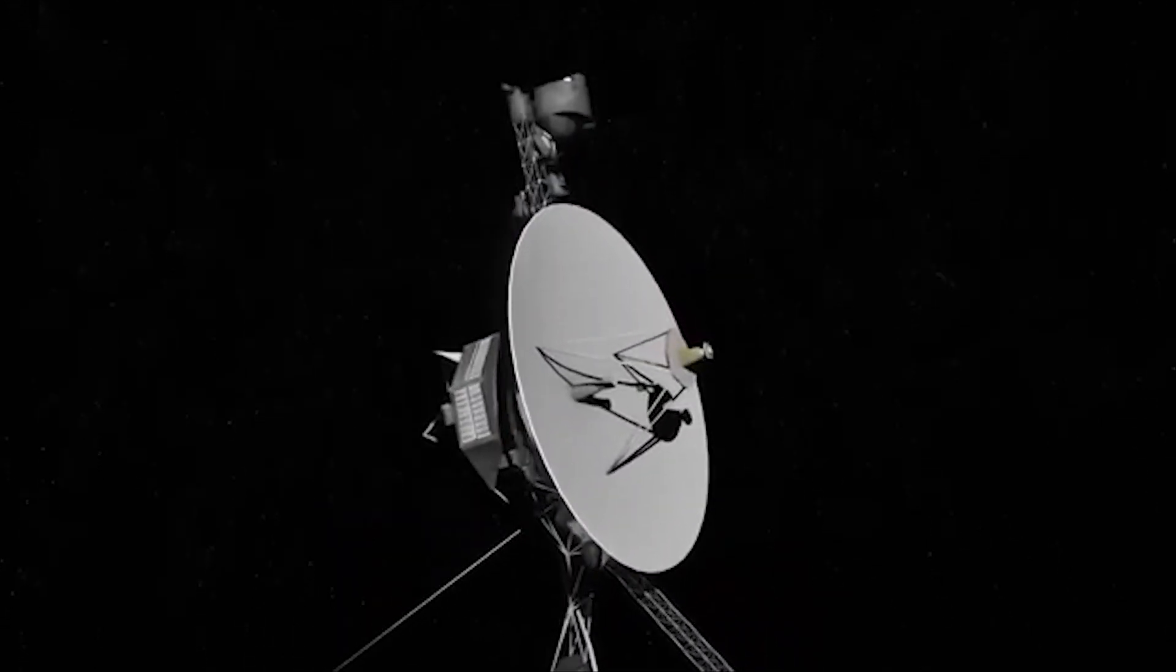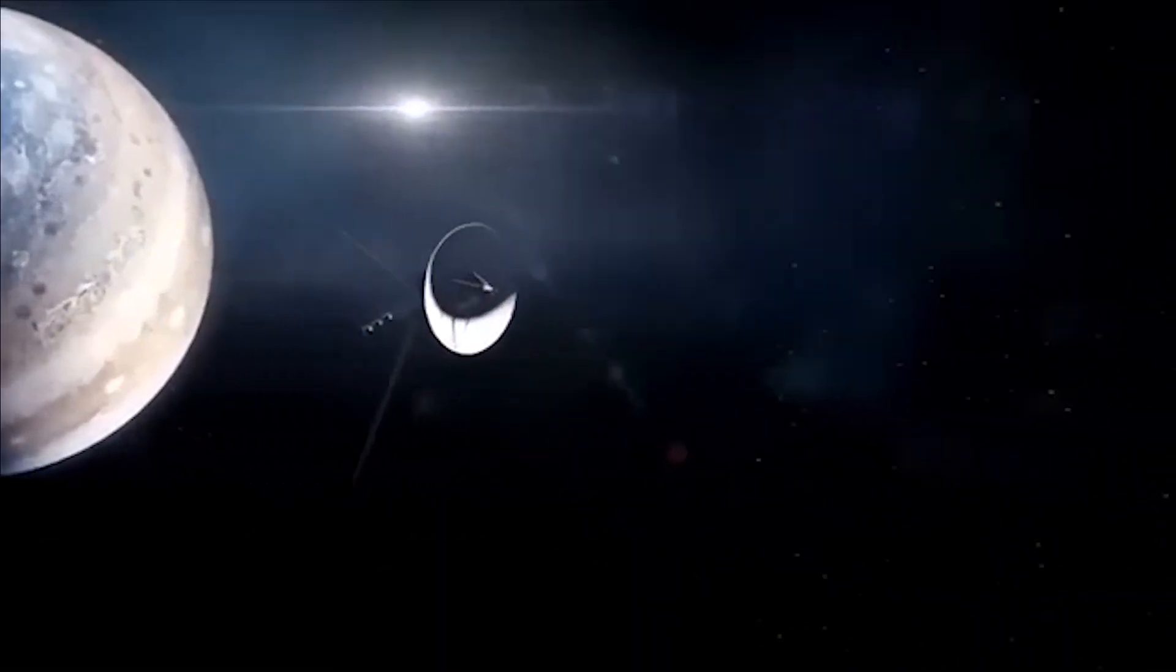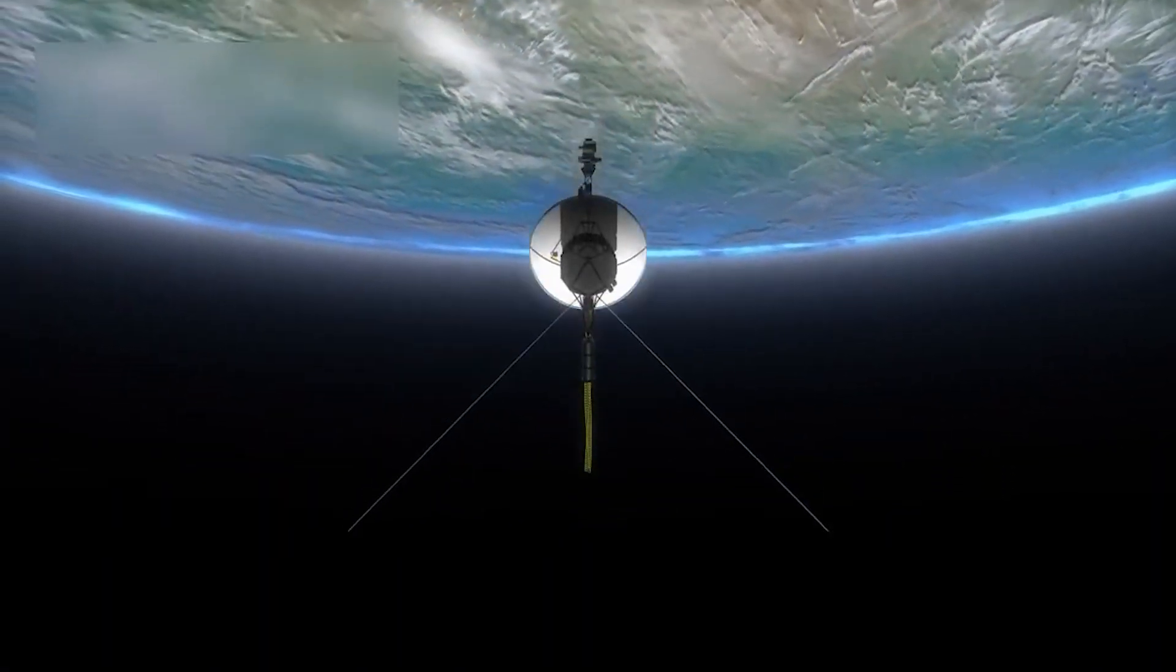When Voyager 1 launched on September 5, 1977, it was meant to be a five-year mission aimed at exploring Jupiter, Saturn, and their moons. But no one could have imagined what would come next.